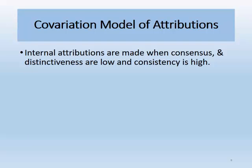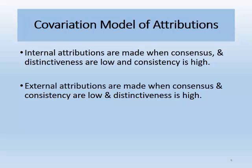Research on the covariation model suggests that people are most likely to make an internal attribution when consensus and distinctiveness are low but consistency is high. In addition, they are most likely to make an external attribution when consensus, distinctiveness, and consistency are all high.